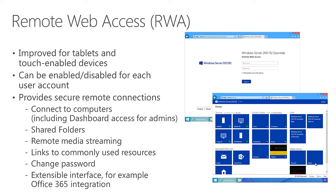One very nice feature of Remote Web Access is the ability to change your password from a remote location - useful if you're not connected to the computer and don't have a VPN connection. Like the Launchpad, the Remote Web Access interface is extensible by third parties. We extend it when you integrate with an Office 365 subscription, which will appear in the Remote Web Access portal as well. Basically, it's a predefined, easy-to-use web page that users can log into when out of the office to interact with their server.